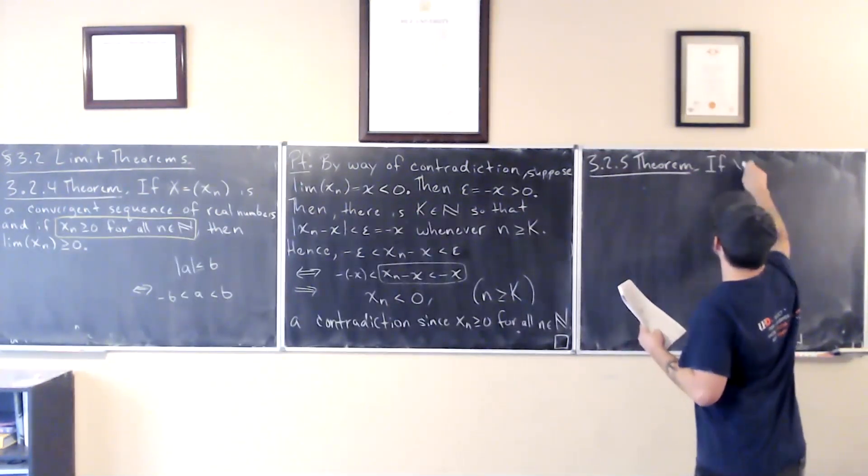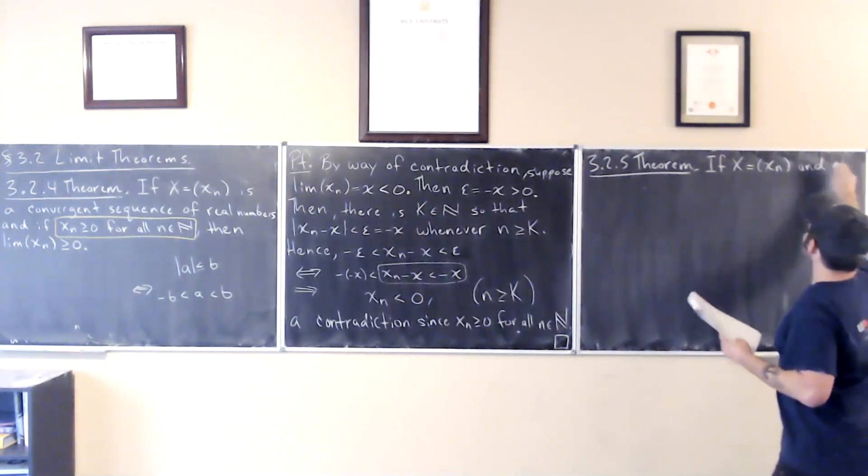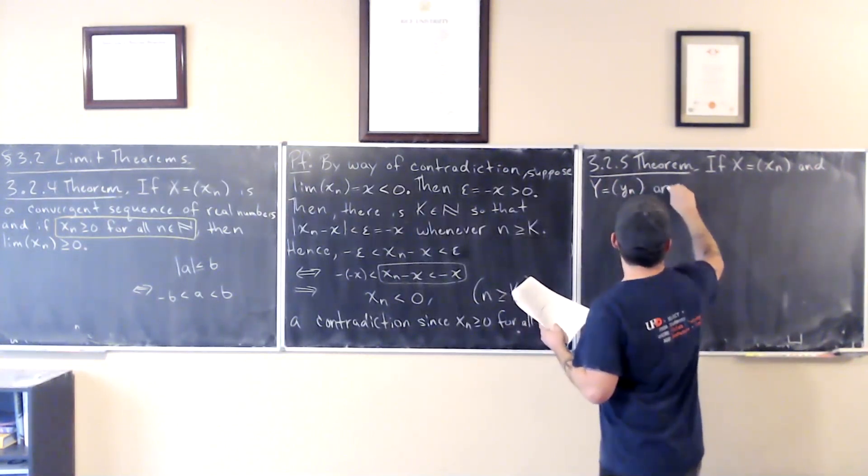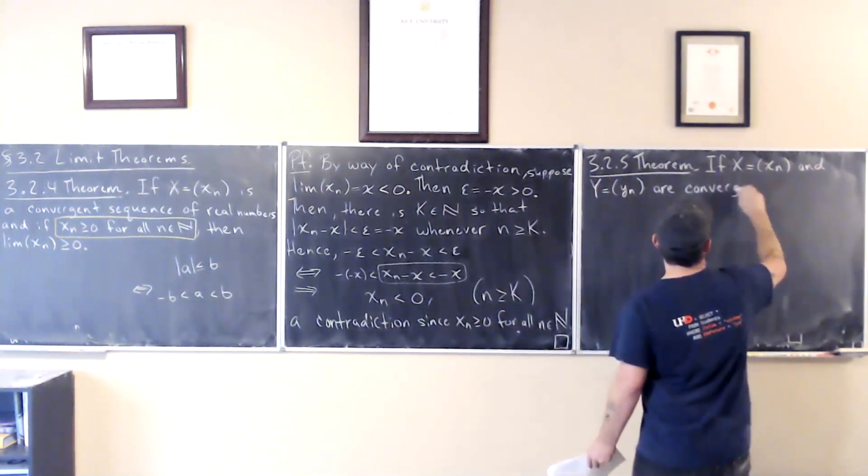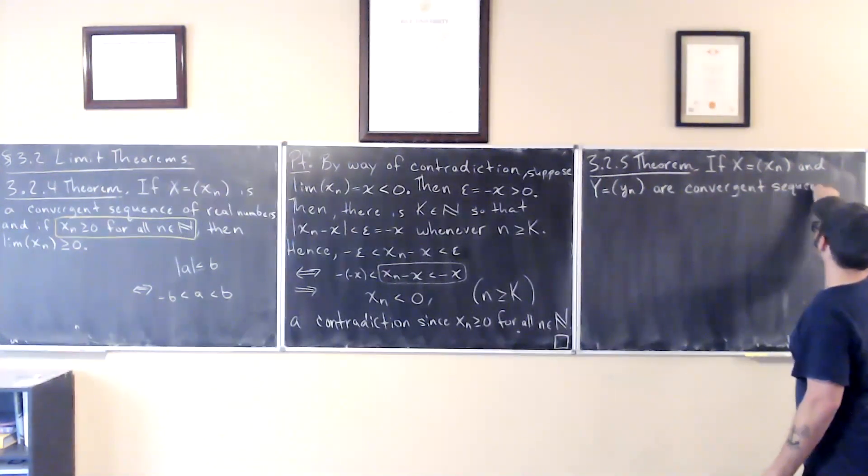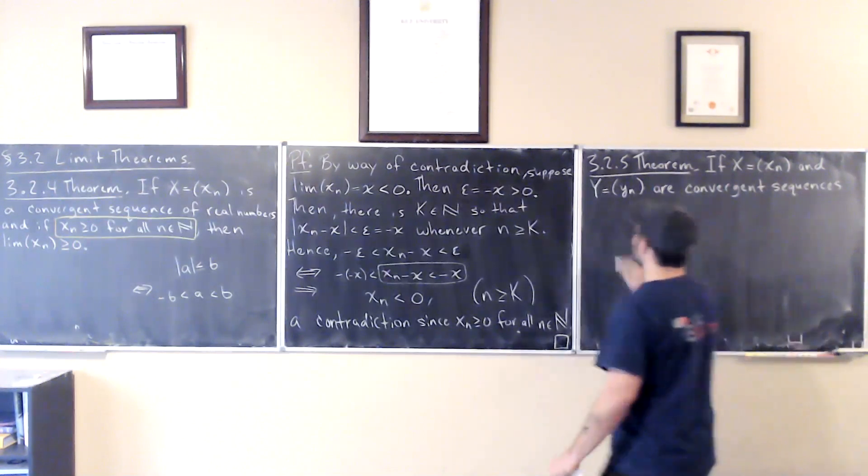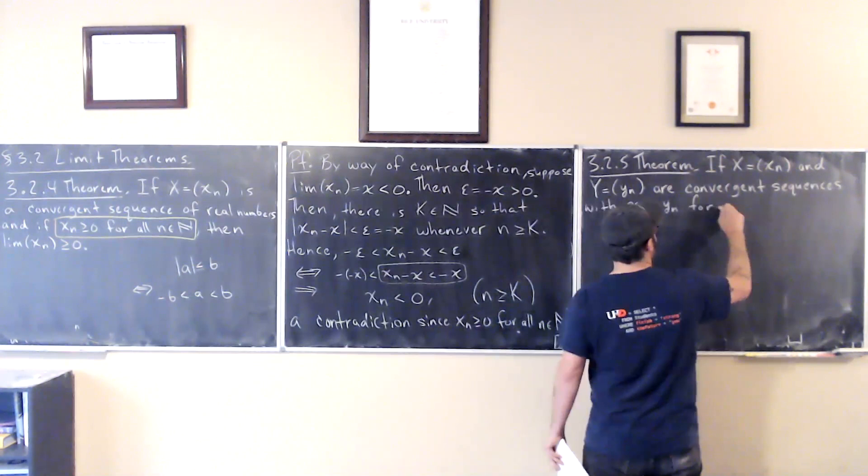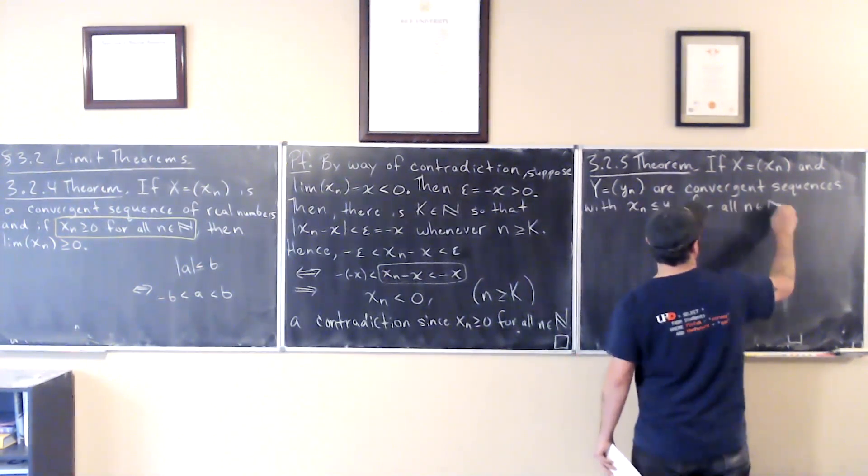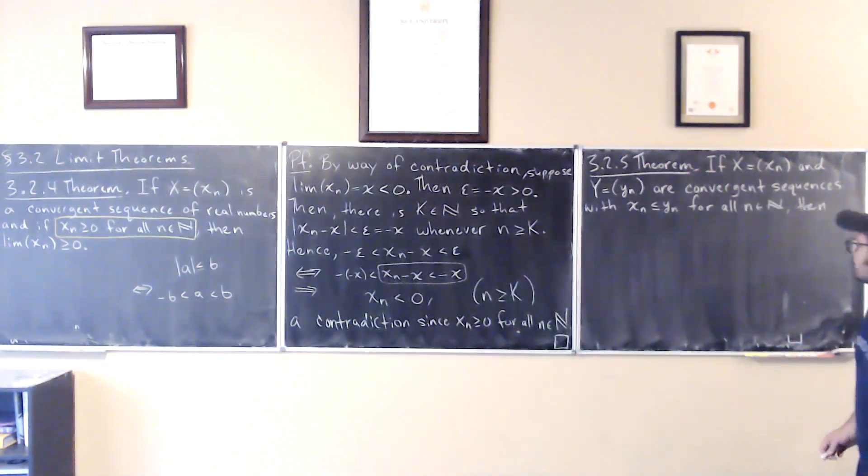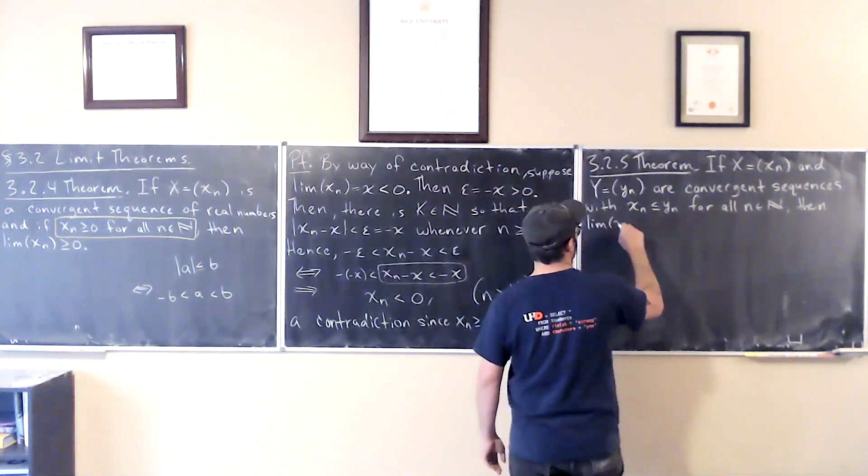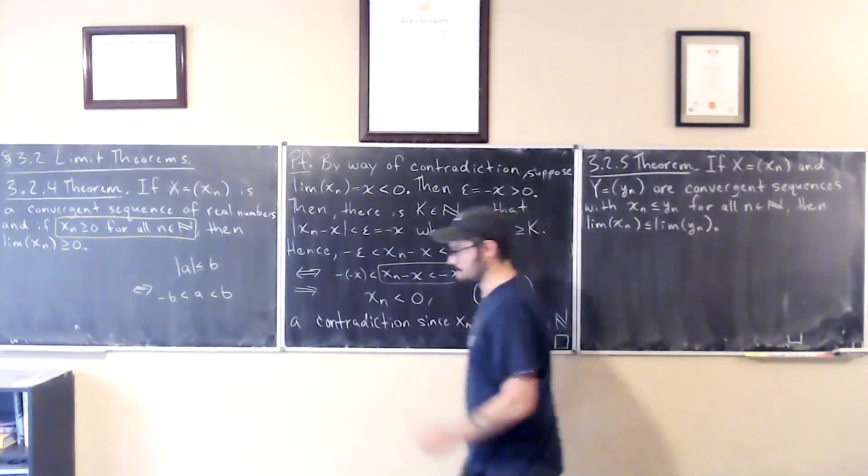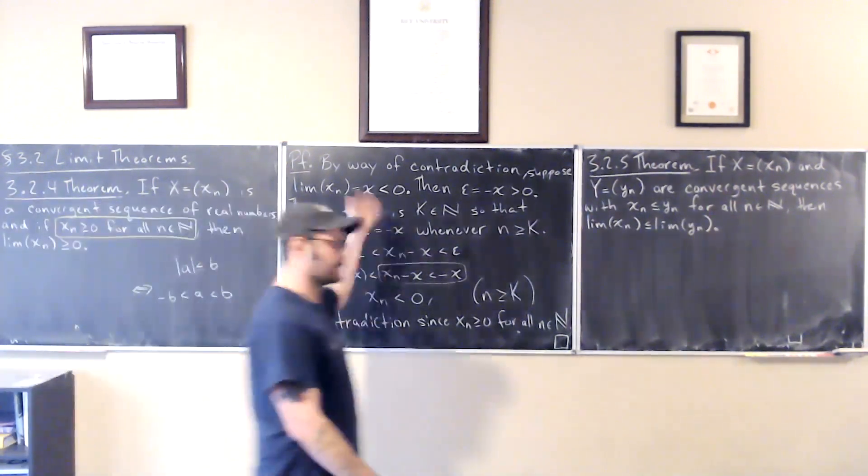If x equals the sequence x_n and y equals the sequence y_n are converging sequences, and if x_n is less than or equal to y_n for all n, then the limits also satisfy this property.